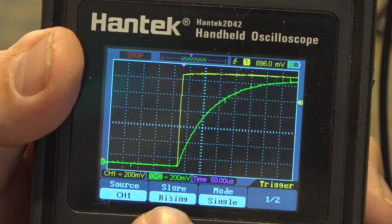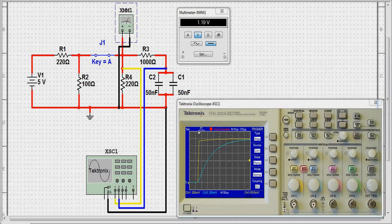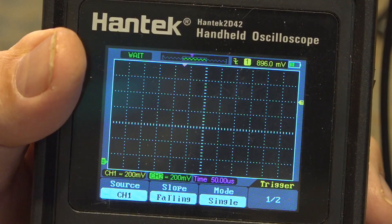Here is the Multisim of my charging curve. You can see I've got 1.19 volts, and I think on my scope I measured 1.22, so that's not too bad. You can see that the charging profile is almost identical to what I got on the Hantek.